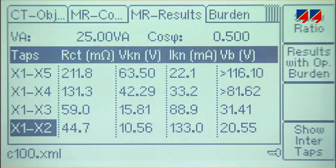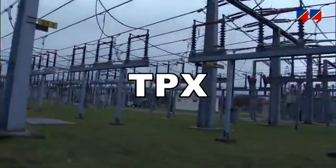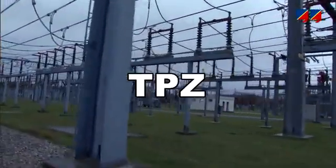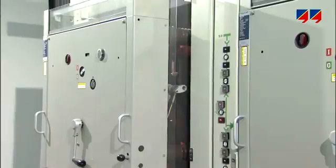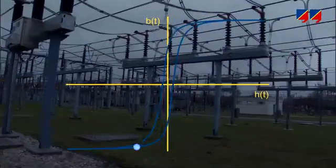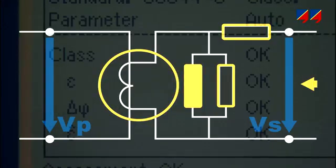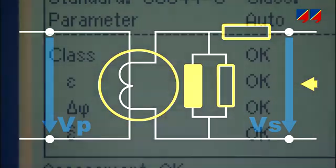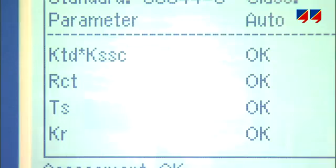In many power systems, TPX, TPY, and TPZ-class CTs are used to ensure a CT's performance during auto reclosure cycles or faults with DC current components, preventing saturation and magnetic remnants. CT Analyzer determines the CT's equivalent circuit diagrams and so can provide the functional parameters relevant for the transient performance of such a CT.